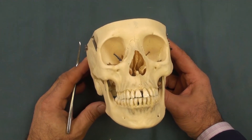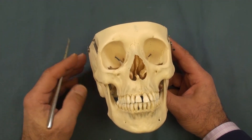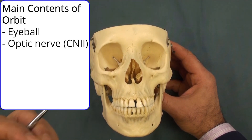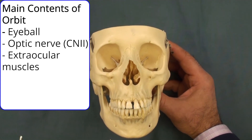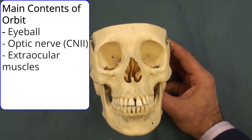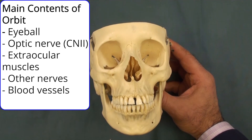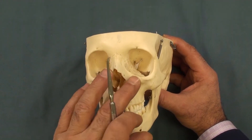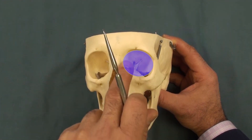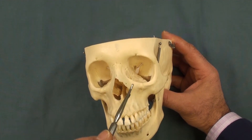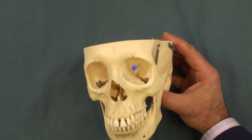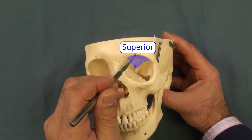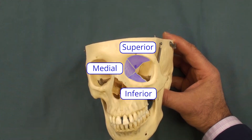The bony orbit, or orbital cavity, refers to two cavities inside the skull that contain the eyeball, the optic nerve, the extraocular muscles that move the eyeball, and the blood vessels and nerves for these structures. We also have adipose tissue inside the orbital cavity. This pyramidal-shaped cavity has a base that opens into the face, an apex, and four walls: the superior, medial, inferior, and lateral walls.